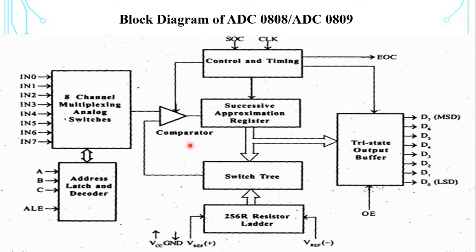The comparator section in ADC 0808 or 0809 is a chopper stabilizer comparator. It converts the input signal into an AC signal and amplifies it. A 256-resistor network is provided instead of a conventional R-2R ladder, because of inherent monotonicity which generates no missing digital codes. Also, the 256-resistor network does not cause load variations on the reference voltage.